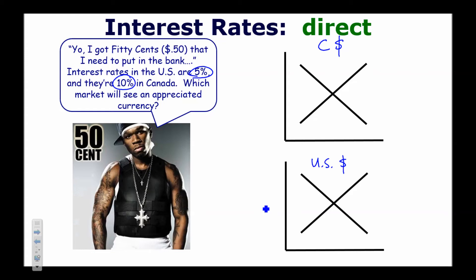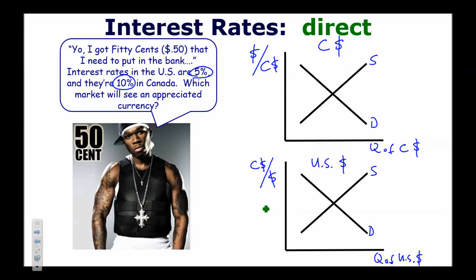Draw the Canadian dollar market priced as US dollars per Canadian dollar, and the US dollar market priced as Canadian dollars per US dollar. 50 Cent wants to put his money in the Canadian bank, so he goes to the foreign exchange market and increases his demand for Canadian dollars — he can't put US dollars in a Canadian bank, he has to exchange them. The higher interest rates in Canada drive up the value of the Canadian dollar. The lower interest rates in the US depreciate the US dollar.